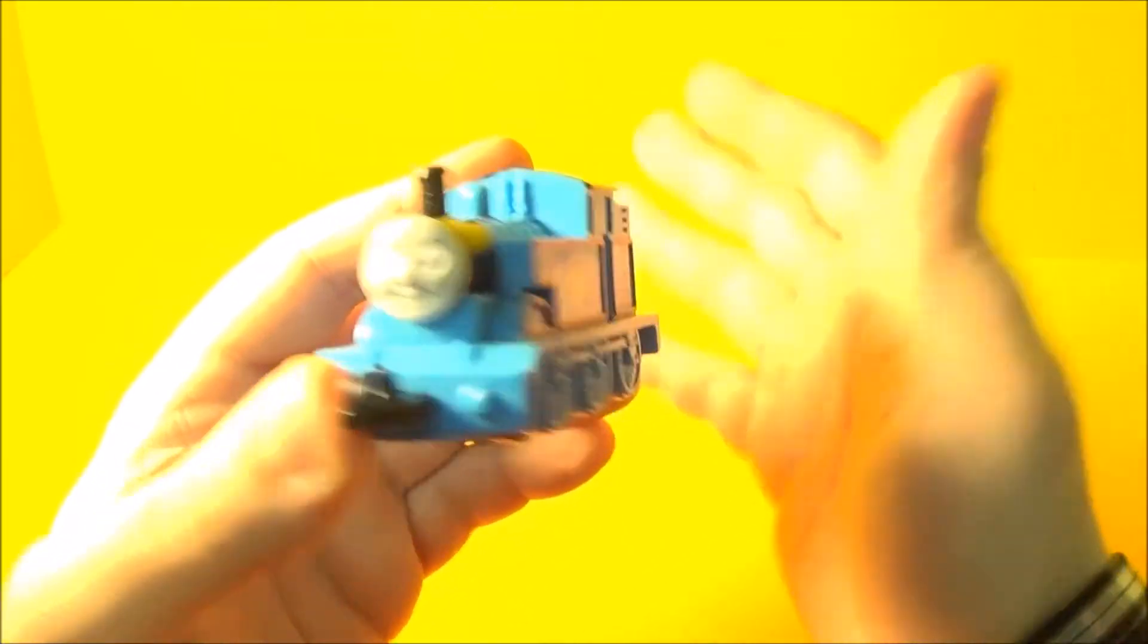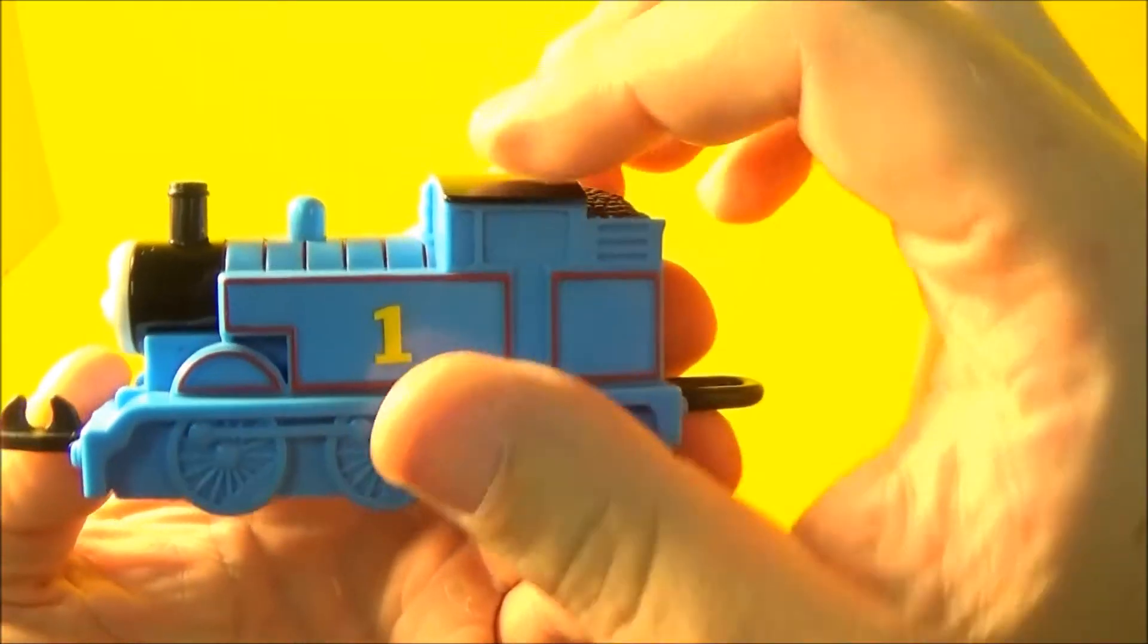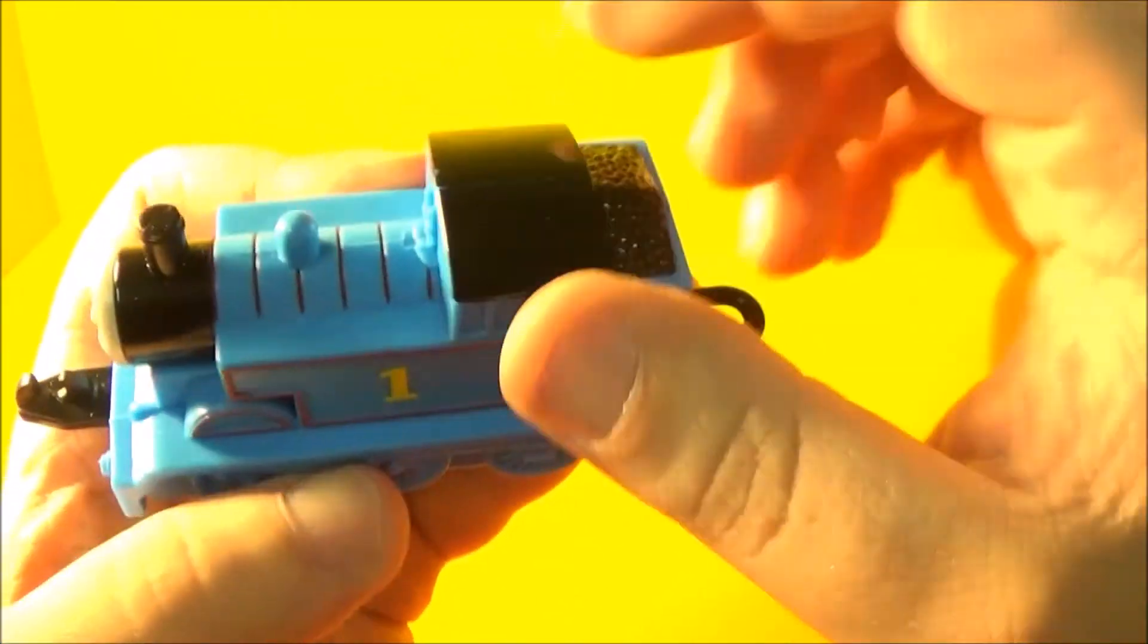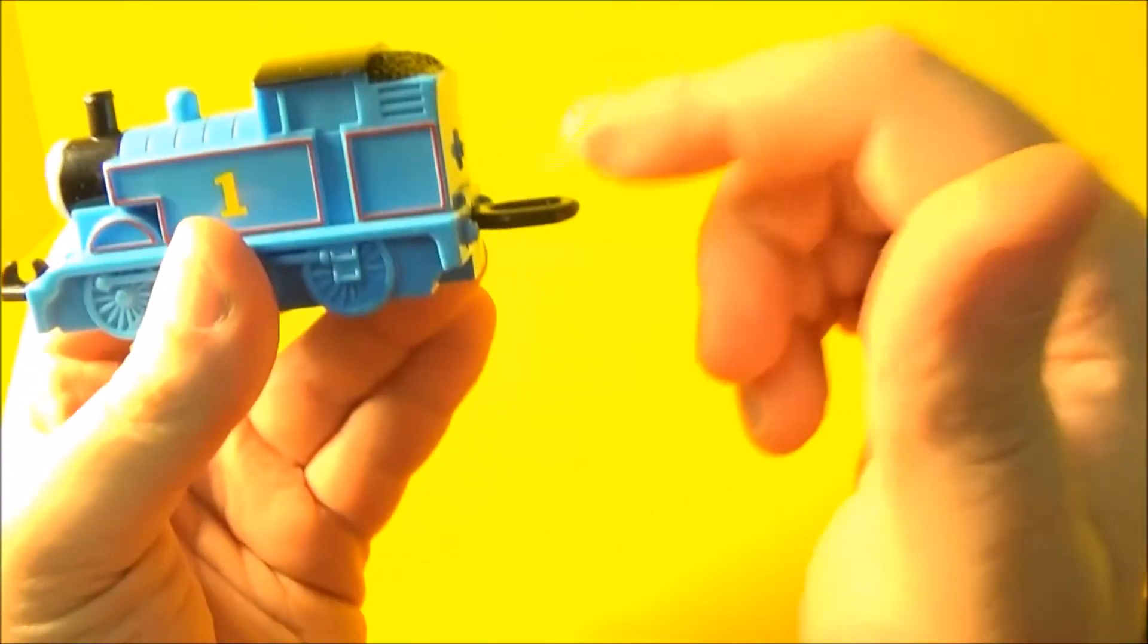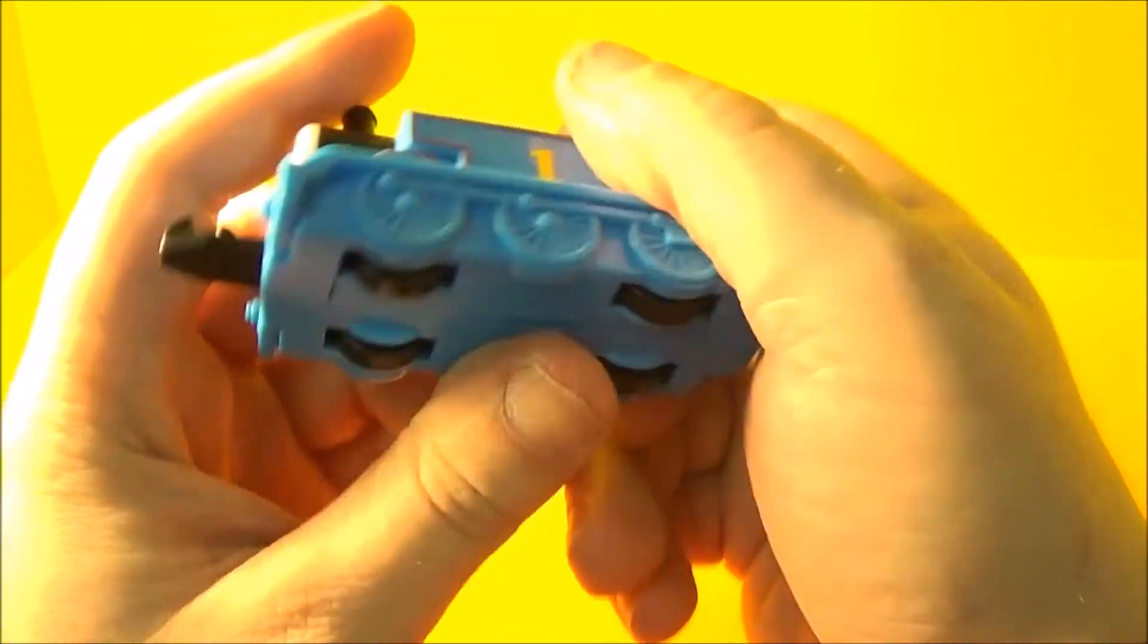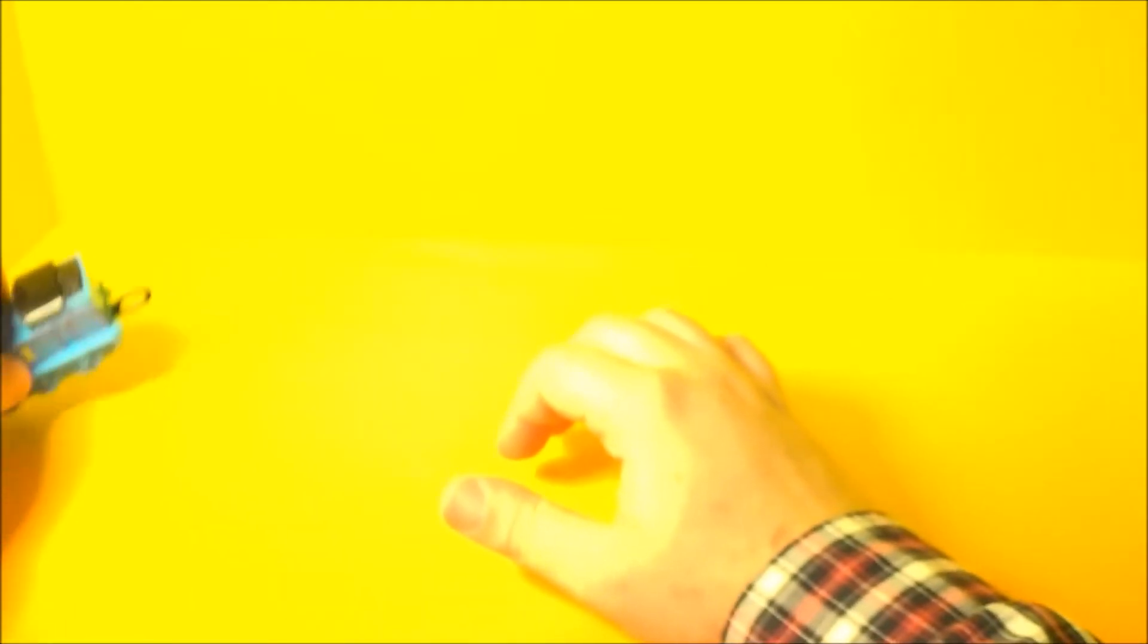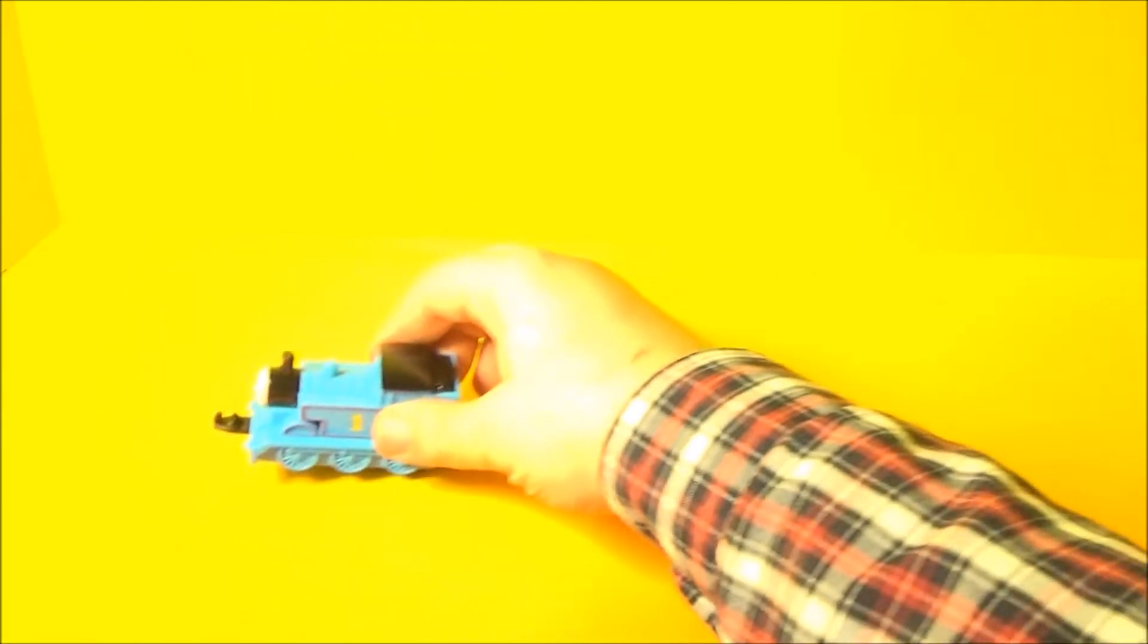Well here we go. We have Thomas the Train. He's number one. Got his nice blue color there. I like that. You know how much I like blue. Nice red borders there. That's where the coal goes. Connector in the back and the front. And he's a pullback. So let's pull him back. Yeah, there we go. Let's do that one more time.